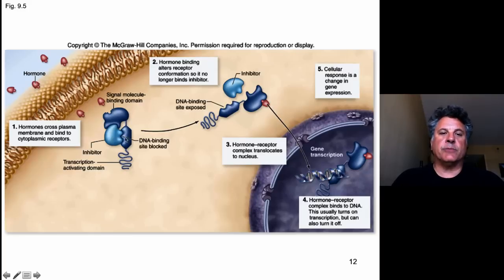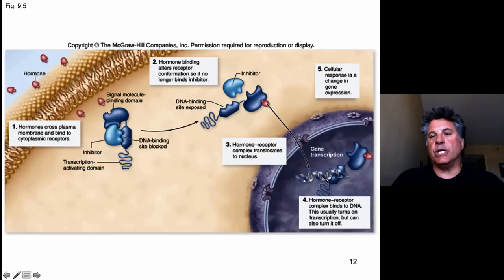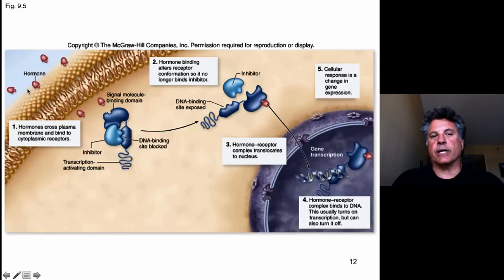That conformational change basically removes an inhibitor that blocks the nuclear localization signal. Then subsequent transport into the nucleus allows the receptor and the co-receptor, which is the hormone itself, to bind to target genes directly. So this is a very direct pathway to changing gene transcription, while some of the other pathways we'll be talking about are more indirect.